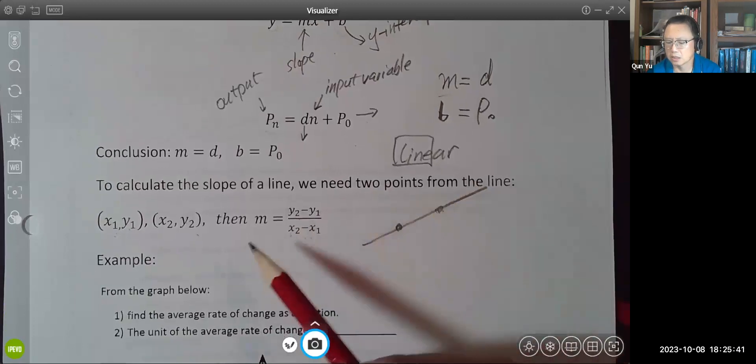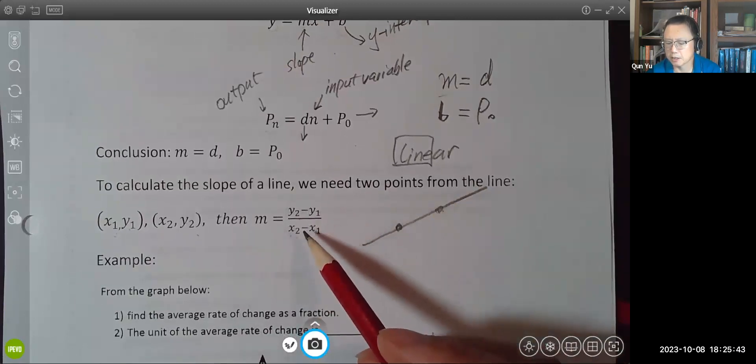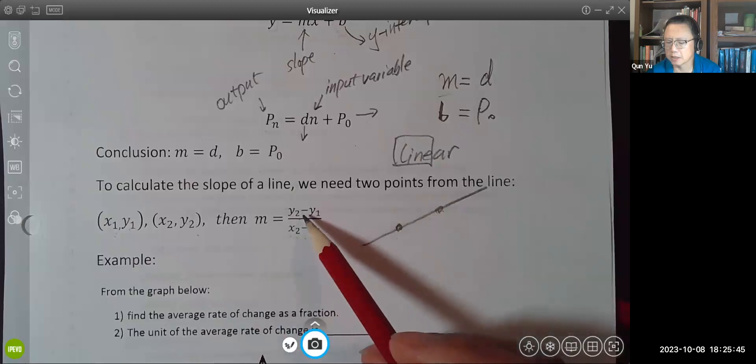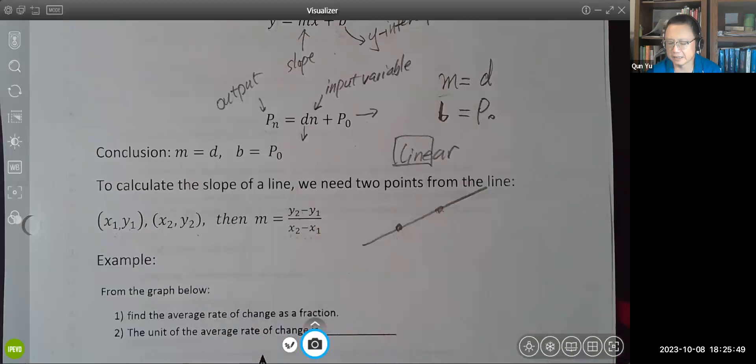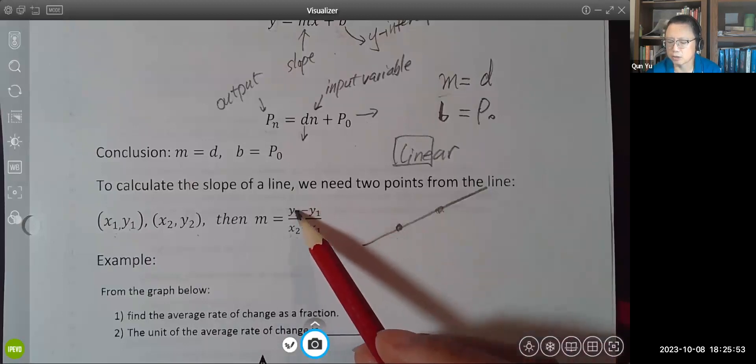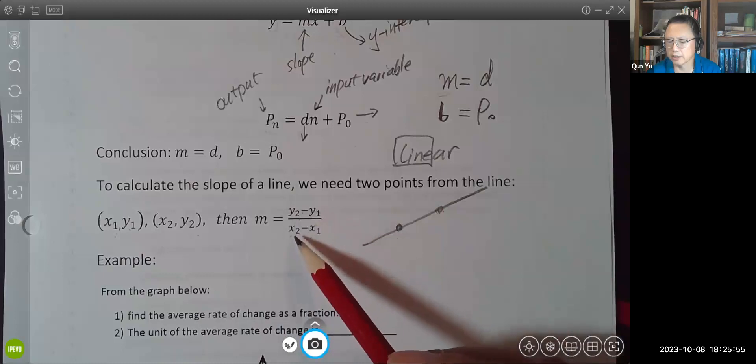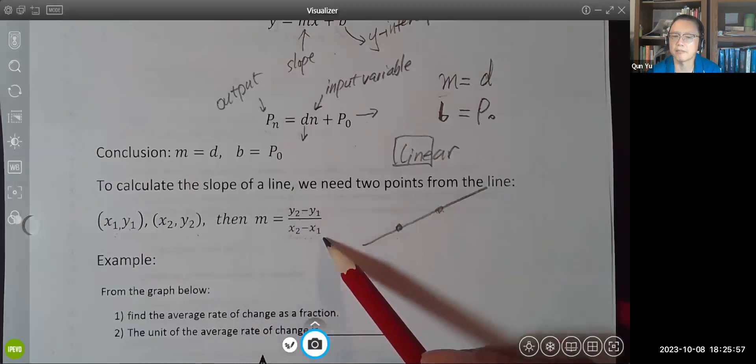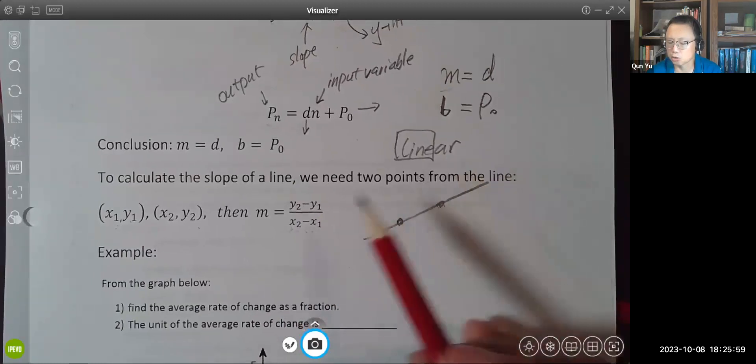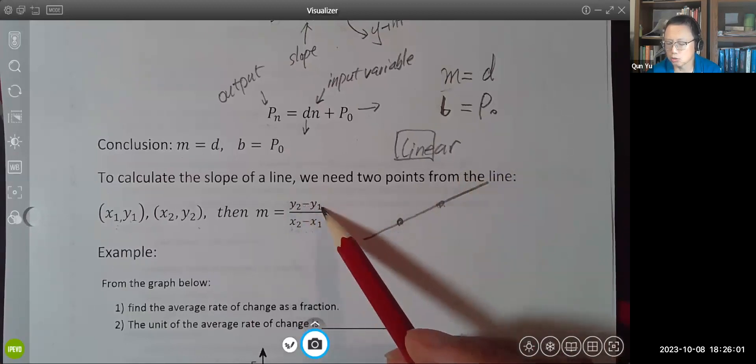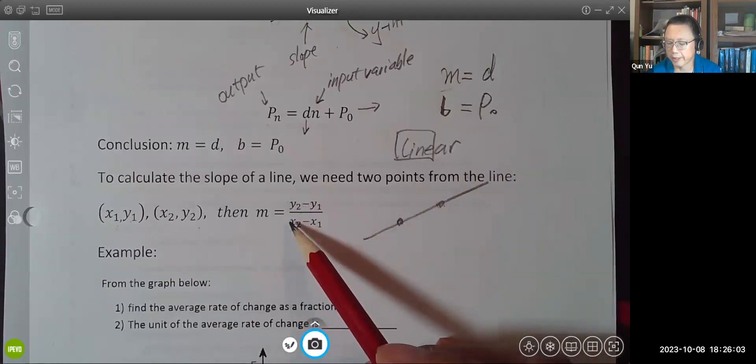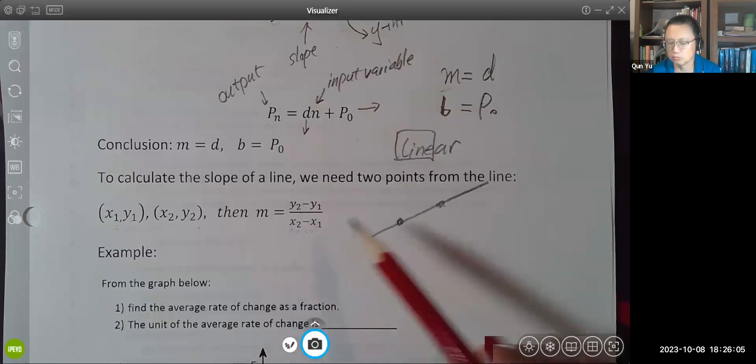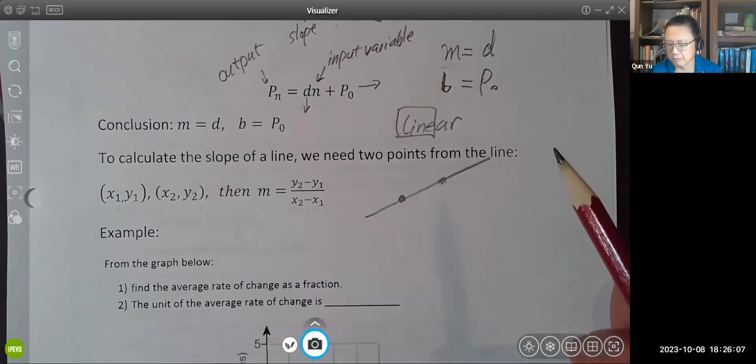And also you need to be aware of this. It doesn't matter which y minus which y, as long as you do it consistently. For example, if you use y2 minus y1 on the top, on the bottom you use x2 minus x1. If you use y1 minus y2 on the top, on the bottom you're going to use x1 minus x2. Either way you're going to get the same value.